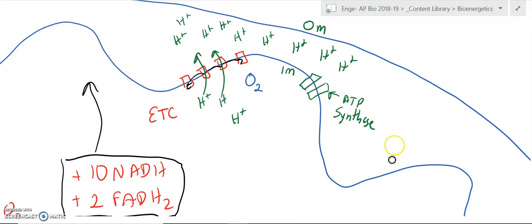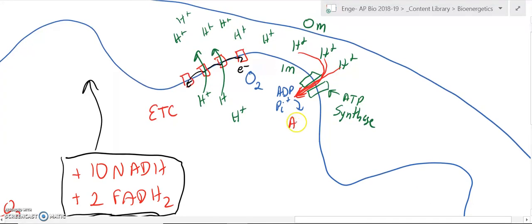At the end, that electron ends up going to the oxygen. But what else happens is, since we've built this gradient, we have the movement of hydrogen through the ATP synthase. That takes inactive ADP and an inorganic phosphate and adds them together to become ATP.